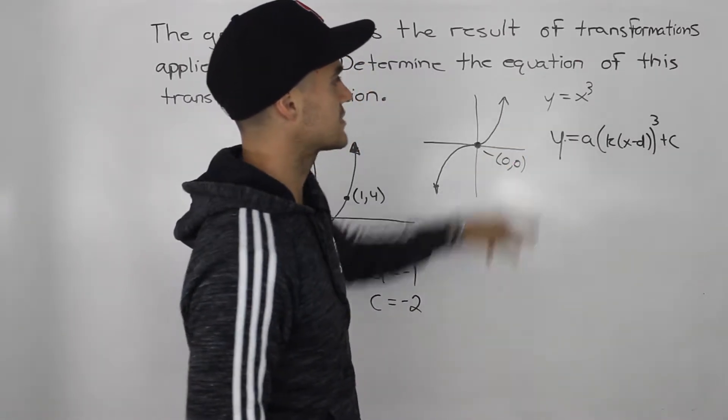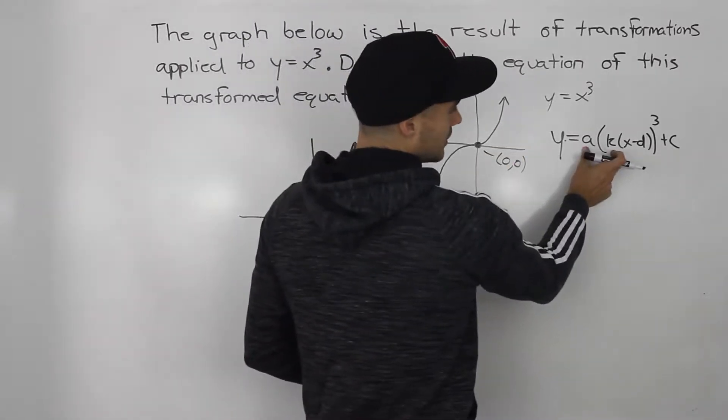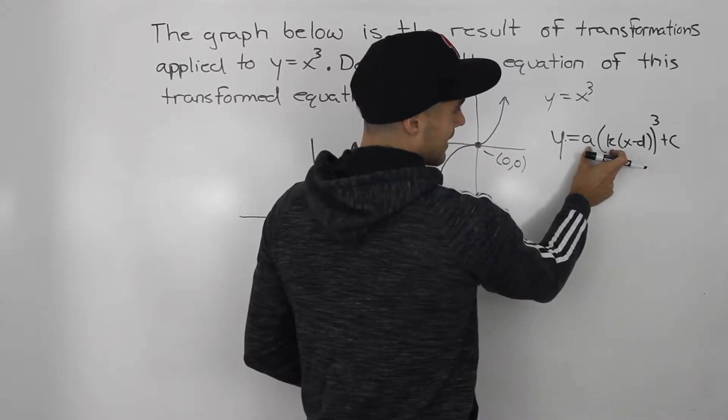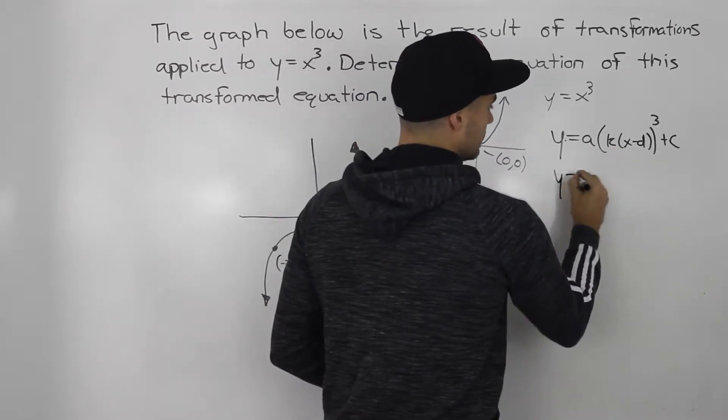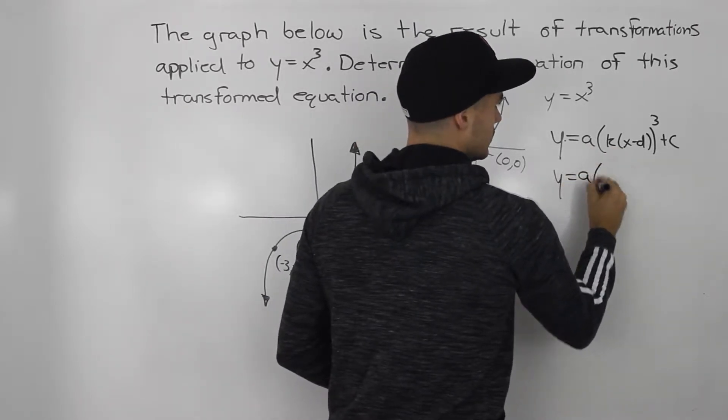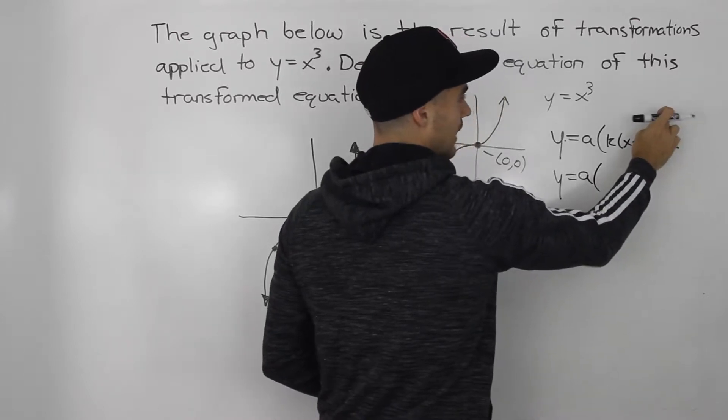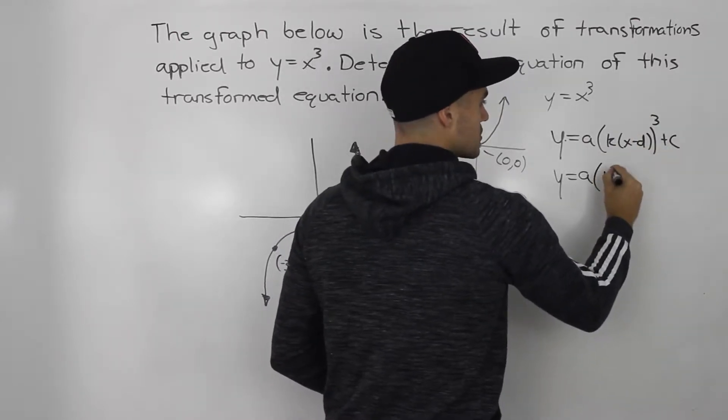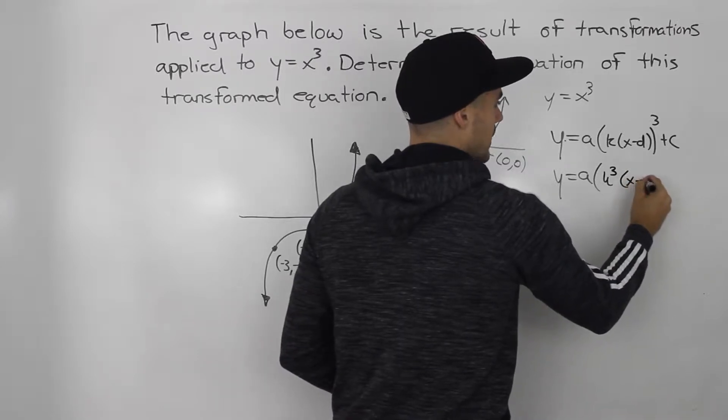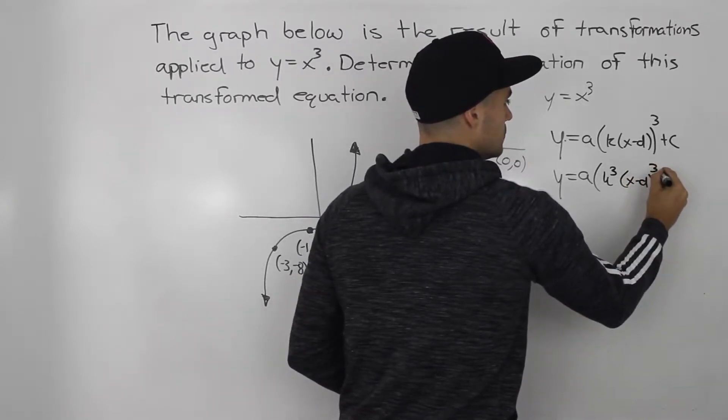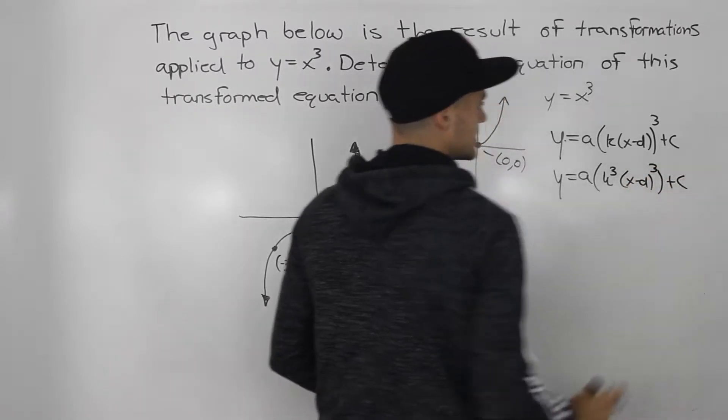Well, when you're dealing with x cubed, you can combine the a and the k. And the way you can do that is you can take this power 3 and distribute it inside the bracket. So you could have like k cubed here, and then this would be x minus d cubed, and this would be plus c.